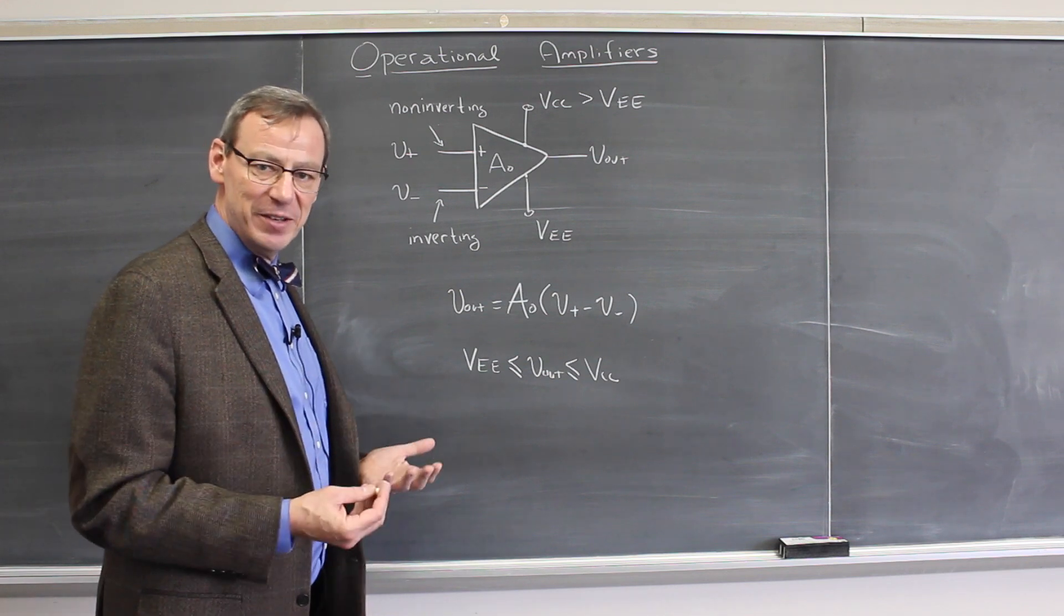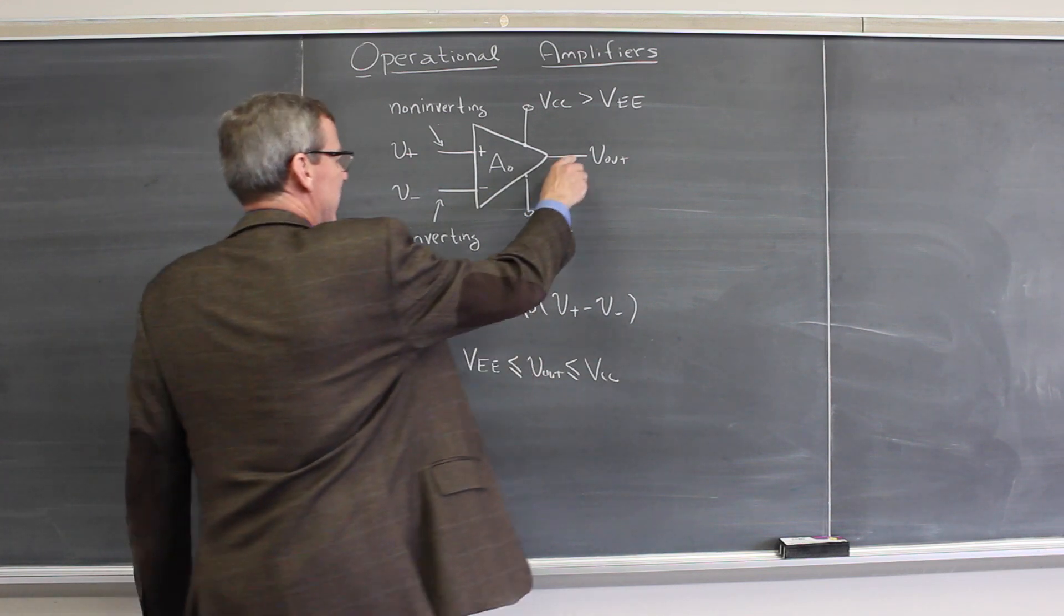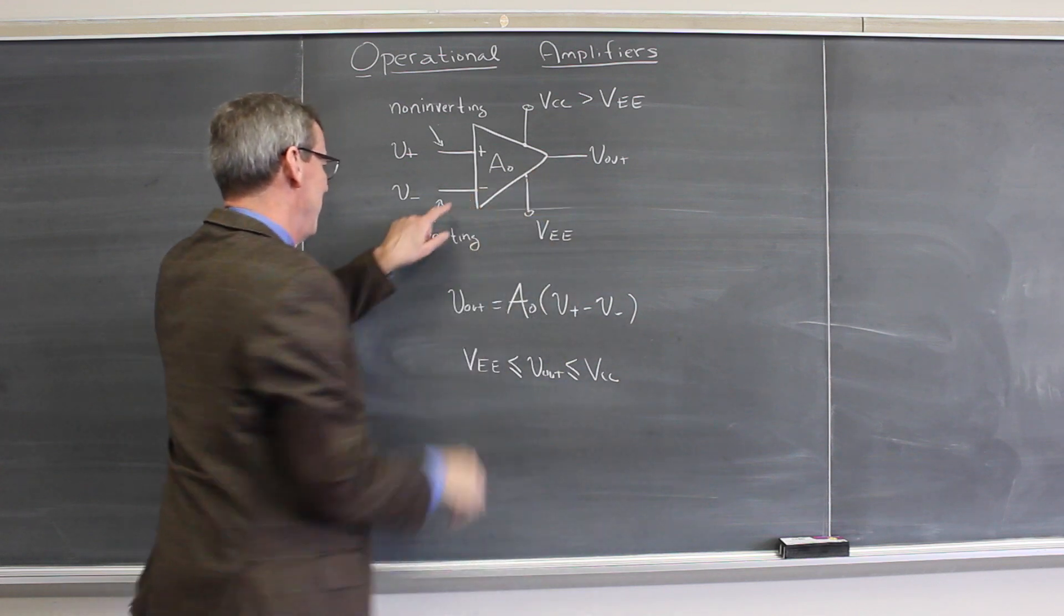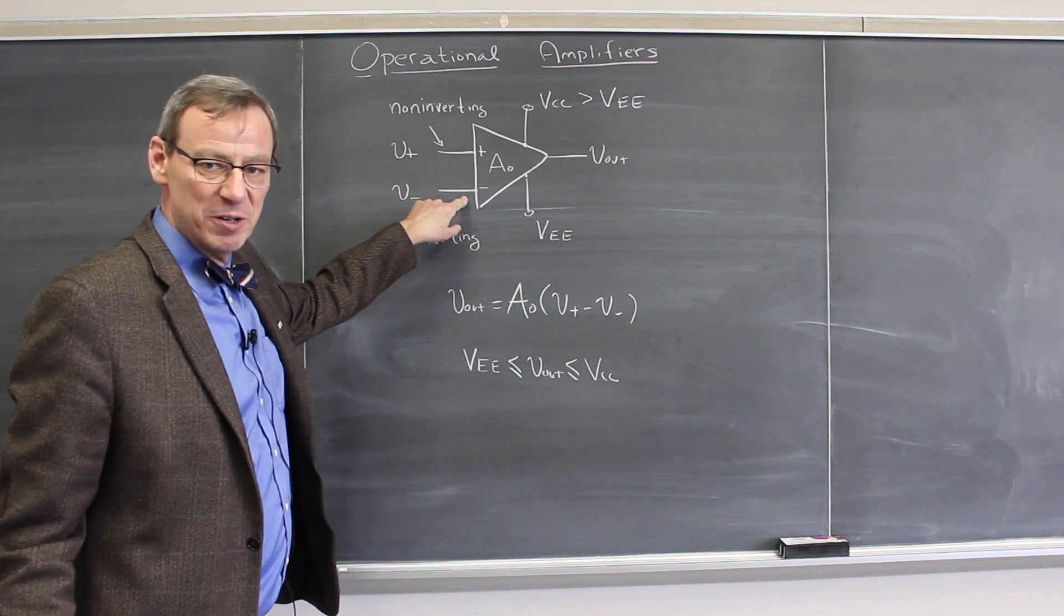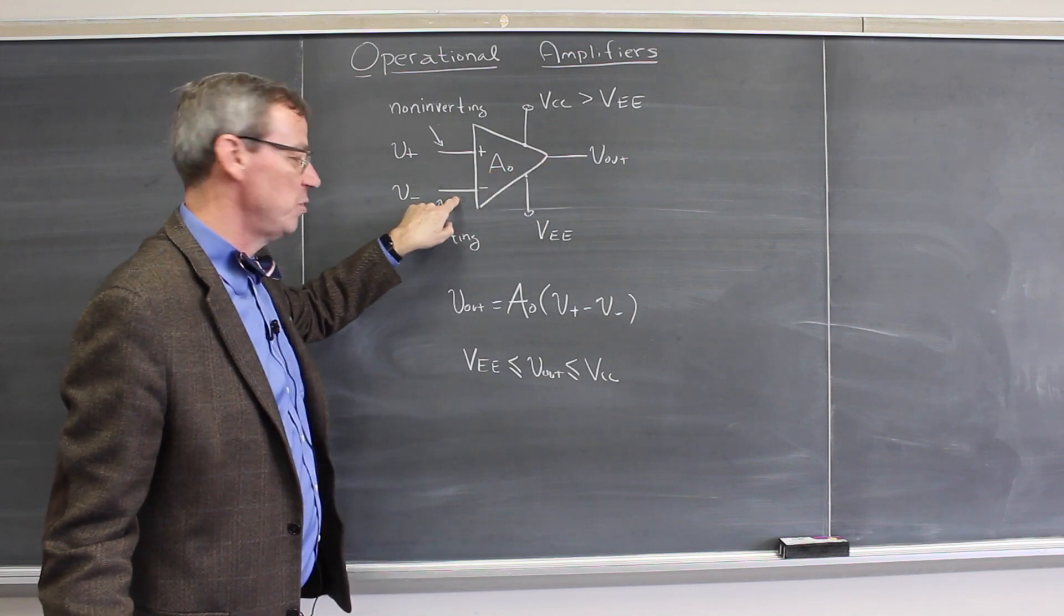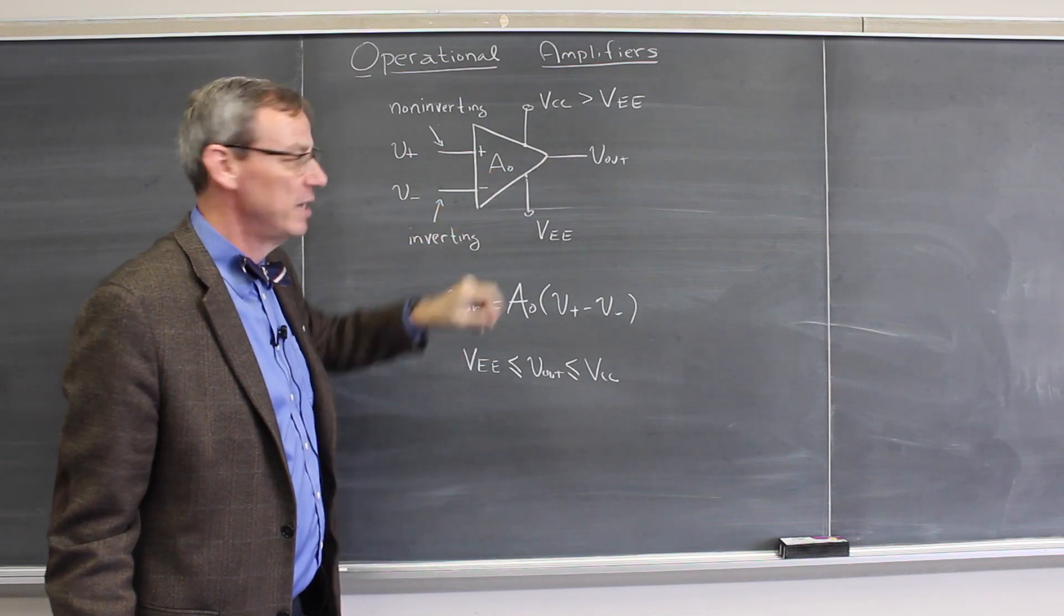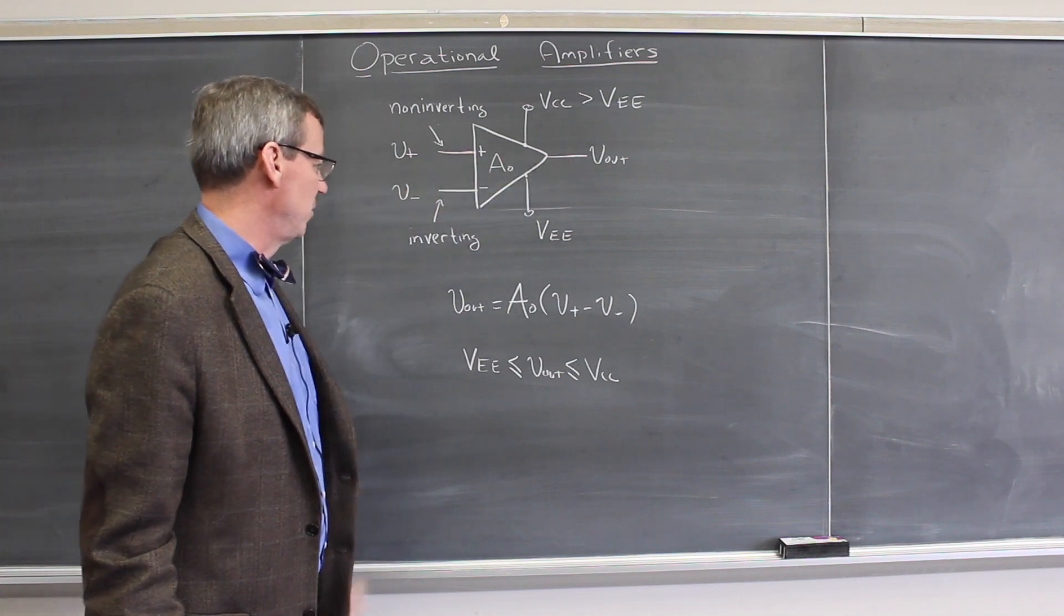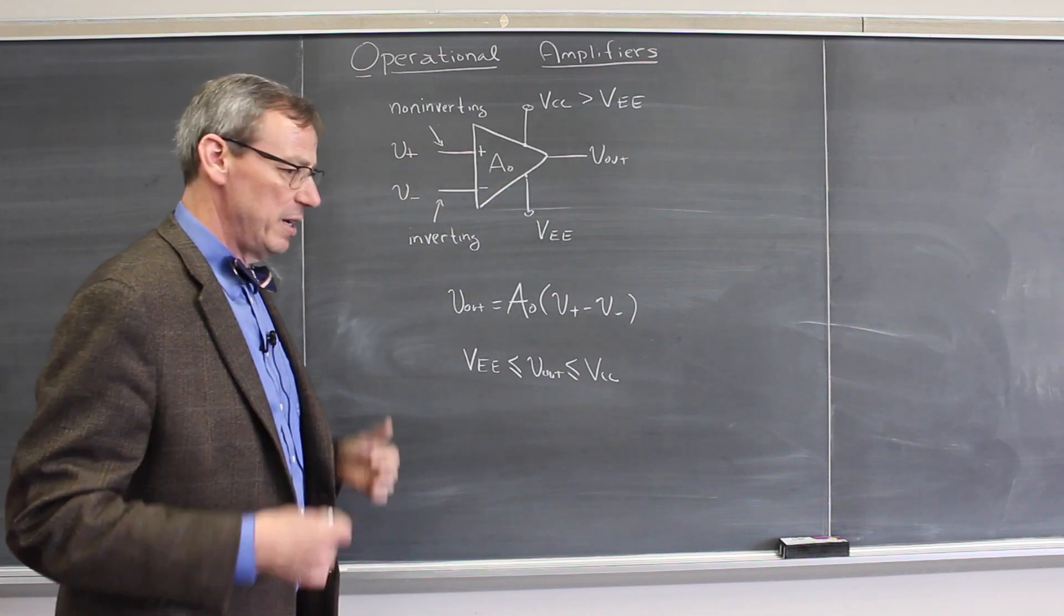We often use this in a negative feedback way. That means some of the output voltage has to be connected back to the inverting input. So negative feedback here would connect output voltage into the inverting input. Positive feedback would connect output voltage into the positive input.